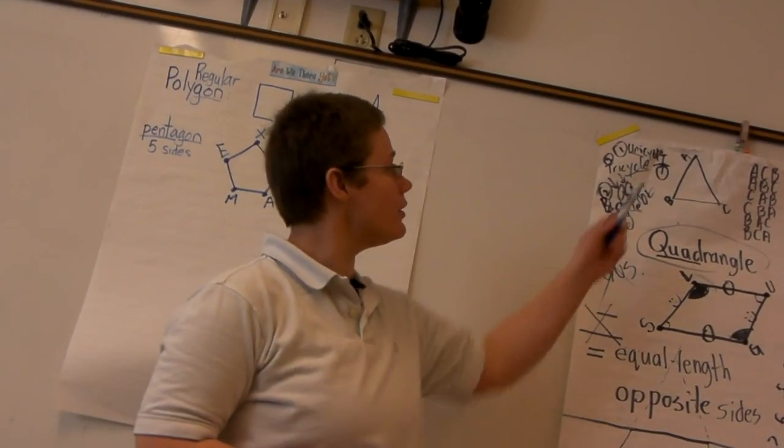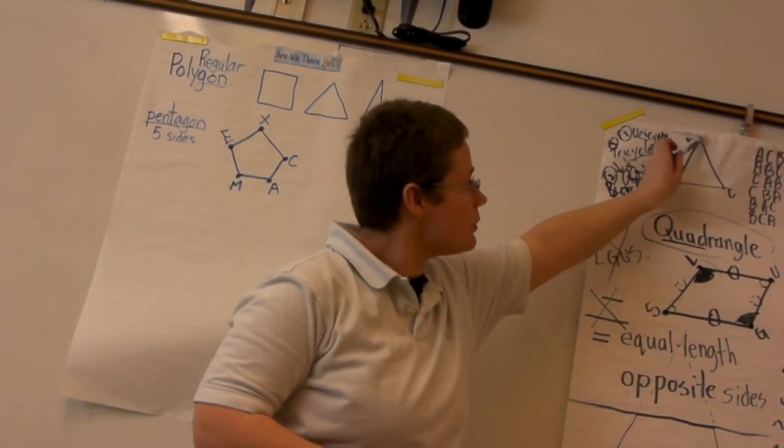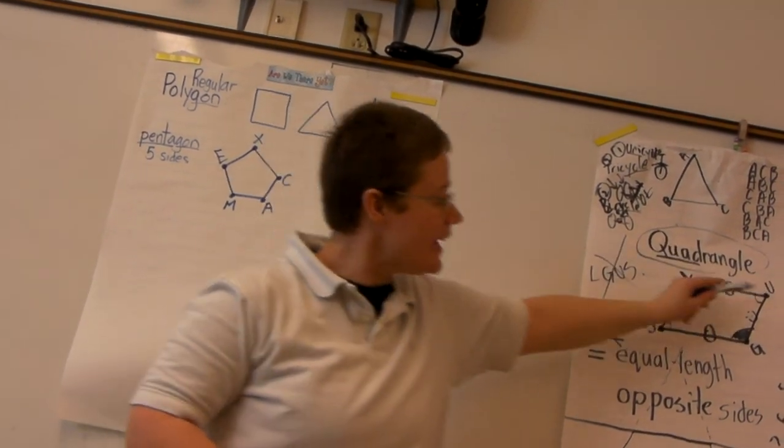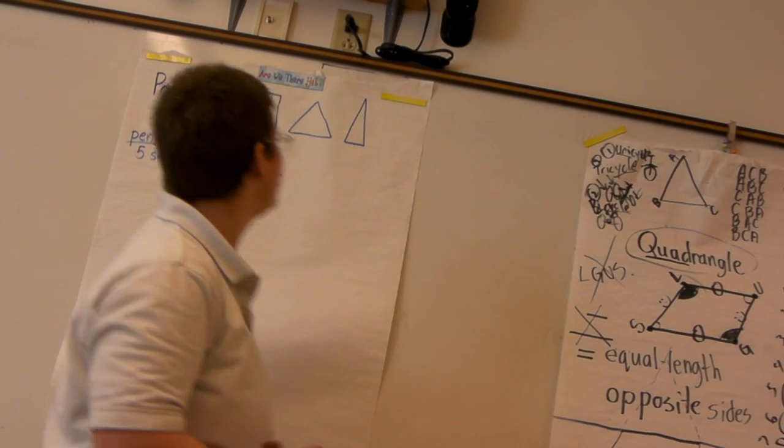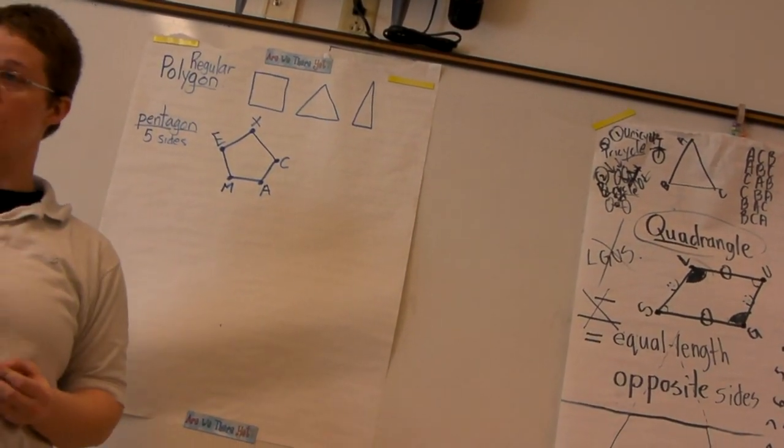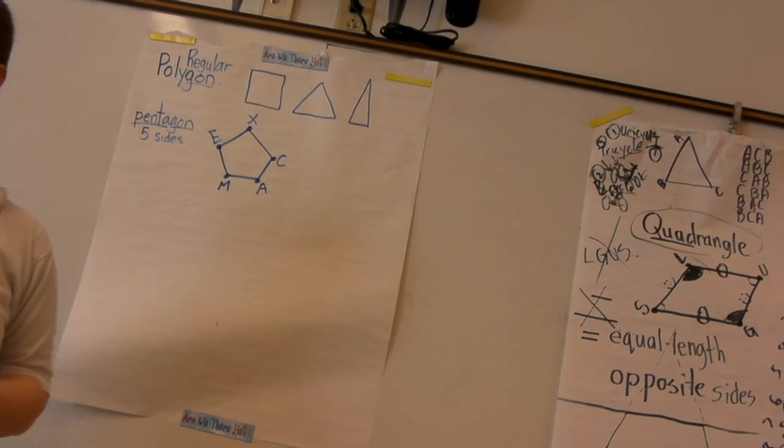And you remember, it follows the same pattern. The triangle had six names. There were three points. The quadrangle had eight names and four points. This pentagon has five points and will have ten names.